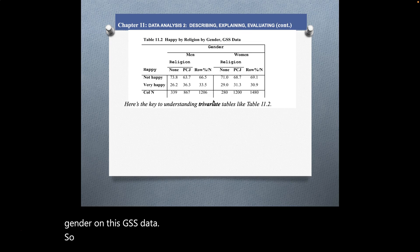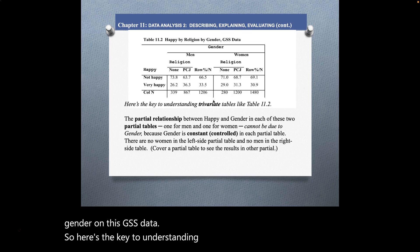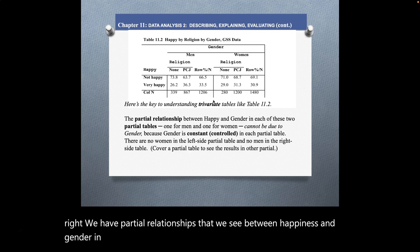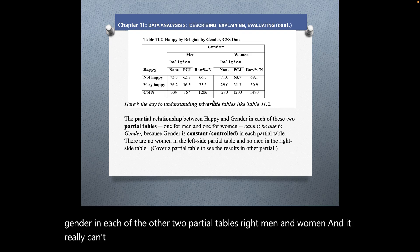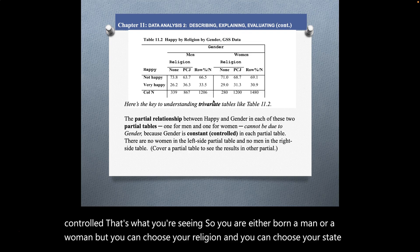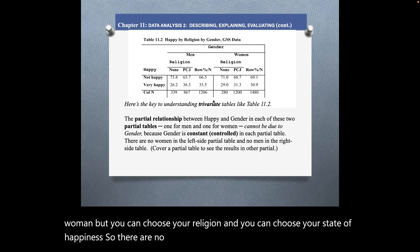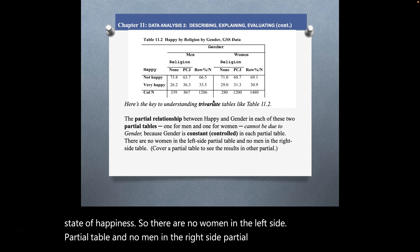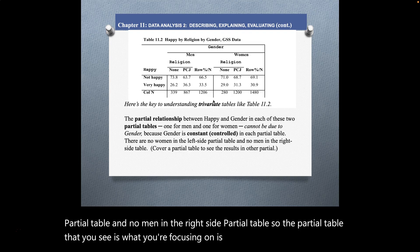The key to understanding trivariate tables is that we have partial relationships between happiness and religion seen in each partial table for men and women. The relationship can't be due to gender because gender is your constant — it's what's controlled. You are either born a man or a woman, but you can choose your religion and your state of happiness. So there are no women in the left-side partial table and no men in the right-side partial table — the partial table focuses on just religion and happiness.